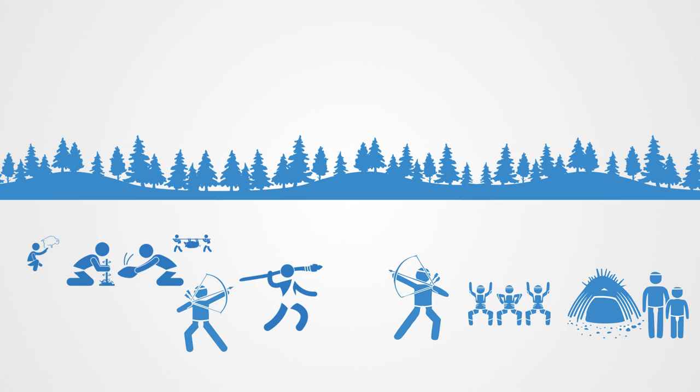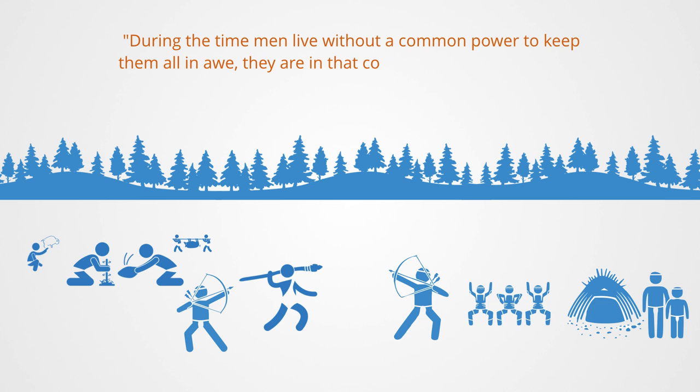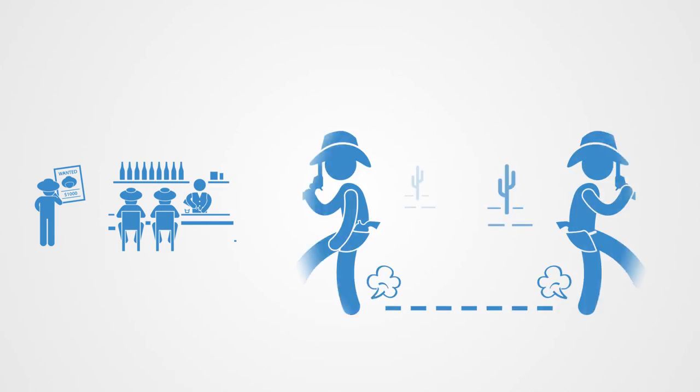This is famously captured in Thomas Hobbes' conception of the state of nature, where he pondered what was life like before civil society. He went on to write, during the time men live without a common power to keep them all in awe, they are in that condition which is called war, and such a war as is of every man against every man. In this state, every person is seen to have a natural right or liberty to do anything one thinks necessary for preserving one's own life. Hobbes's ideas illustrate vividly how in the absence of a third party to enforce cooperation, competition and conflict can prevail.